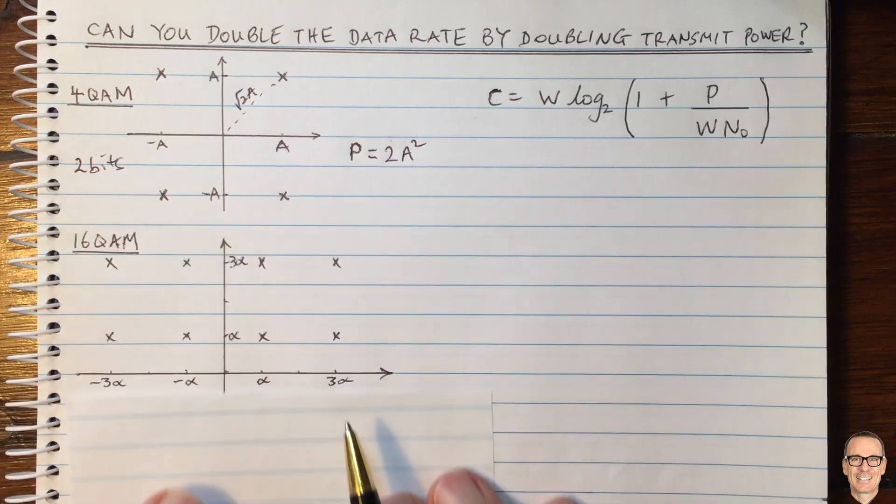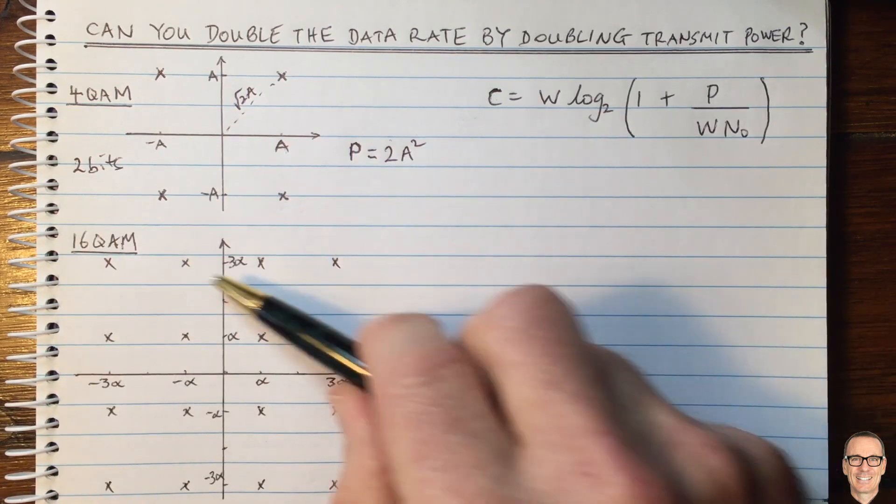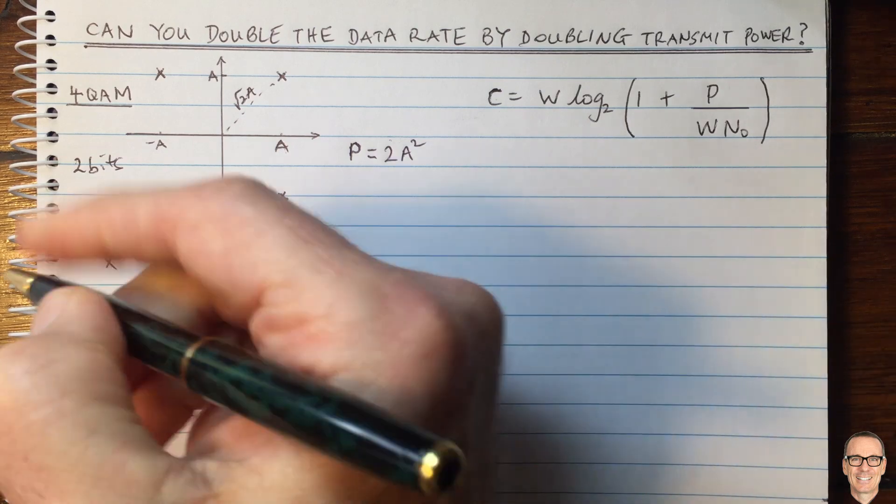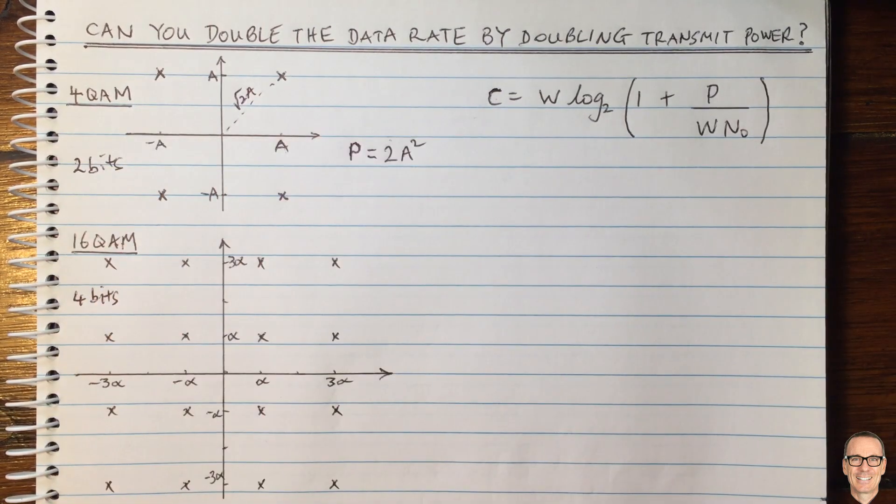So now let's think about doubling the bits. So here we've got 16 QAM with 16 points. That means that we can represent four bits for each constellation point. So we've doubled the bits.